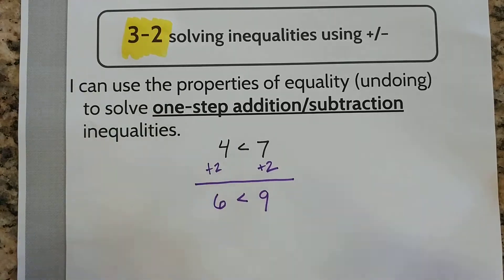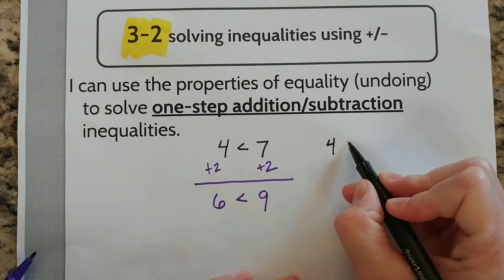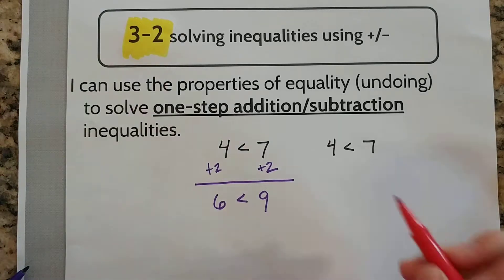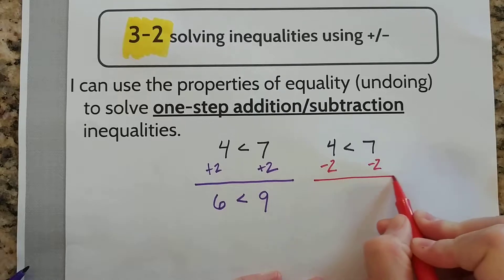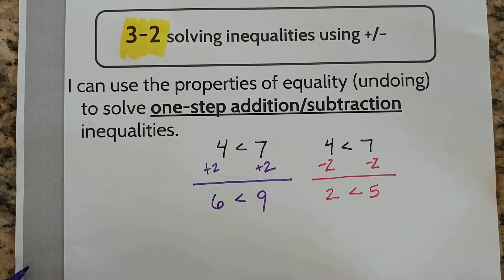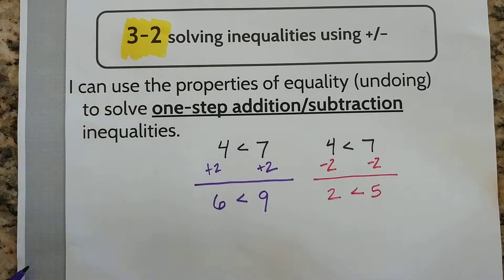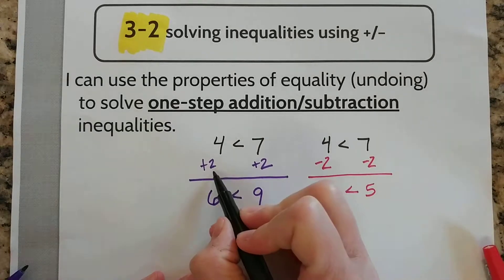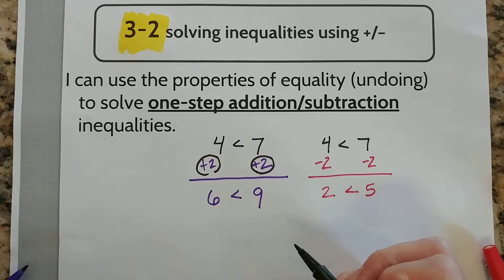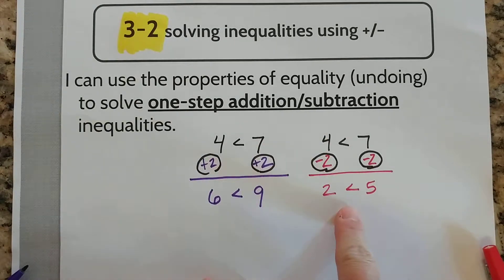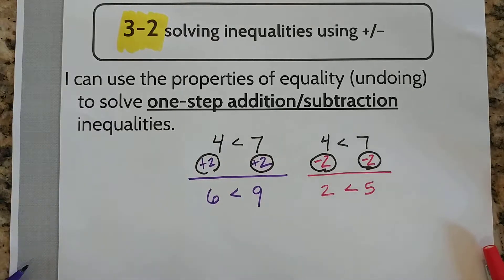And we know that 6 is less than 9 — that is true. Let's try this again. And instead of adding a number to both sides of the inequality, I'm going to subtract. So let's try subtracting 2 from both sides. Now I'm going to get 2 is less than 5. And is it true that 2 is less than 5? Well, yeah, it is true. So hopefully from this information, we can see that if we were to add the same number to both sides of an inequality, or subtract the same number from both sides of an inequality, it's going to remain true. With that information, let's try a couple examples.